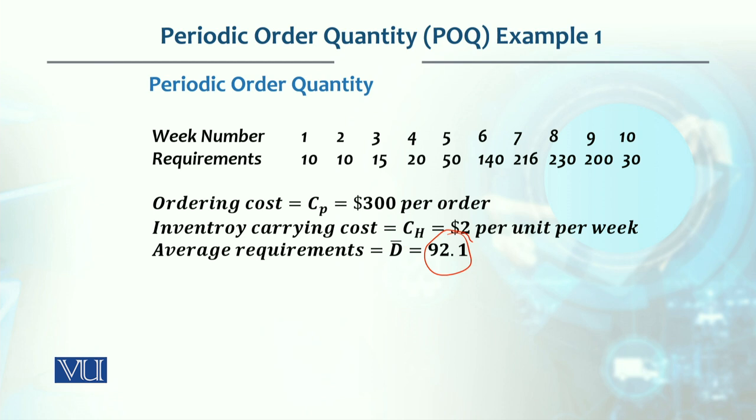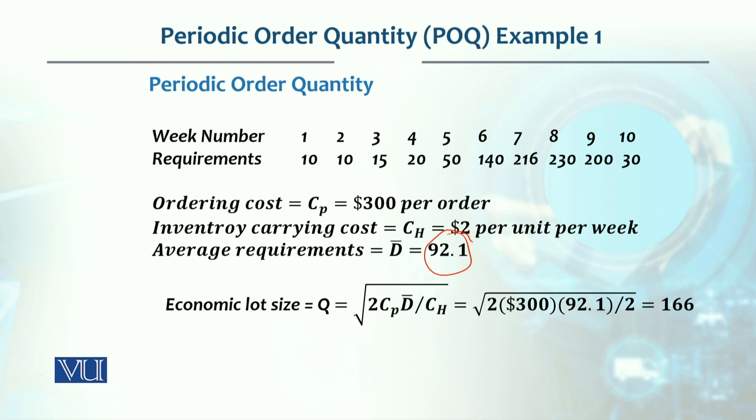Now we have to calculate the time between orders. First we calculate the economic order quantity, which is 166. Then the time between orders is the order quantity divided by the average weekly demand. When we divide 166 by 92.1, we get 1.8 weeks.